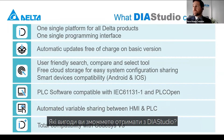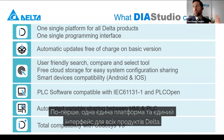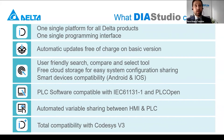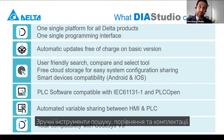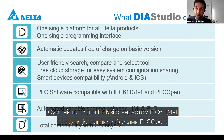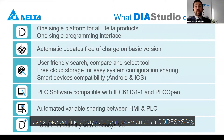What benefits can DIA Studio offer? Very simple. First, one single platform for all Delta products and one single interface. Automatic updates and free of charge for the basic version. User-friendly search, compare, and select tools to make it easier for your budget and bill of materials. PLC software compatible with IEC 61131-3 and PLCopen function blocks. Automated variable sharing between HMI and PLC to make it easier to integrate all components of your machine. And total compatibility with Codesys version 3.